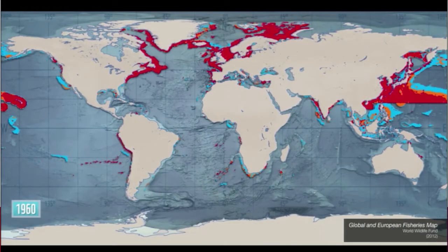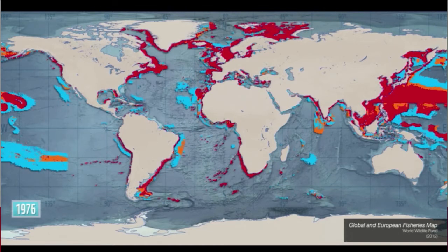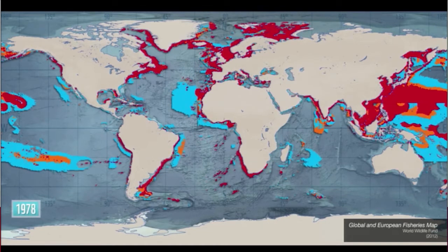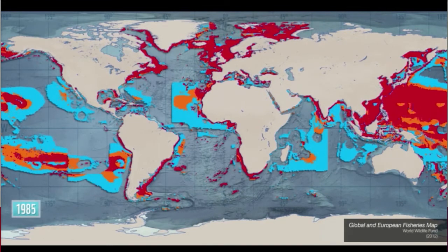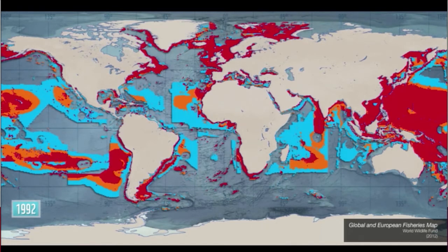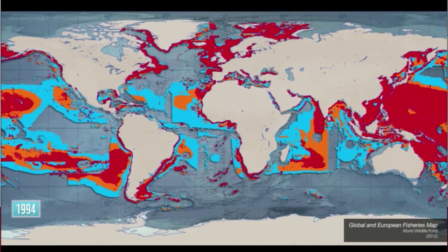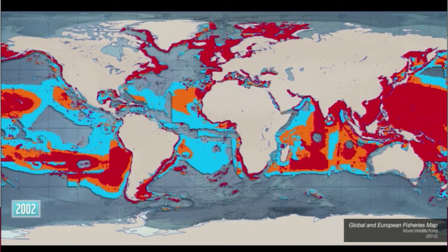But the dire consequences of taking the ocean's regenerative capacity for granted are becoming increasingly stark. This visualization from WWF shows that the global expansion of fishing fleets over the past few decades has been expanding rapidly. Since 1950, fishing areas have increased tenfold, with 87% of species either fully exploited or collapsed.